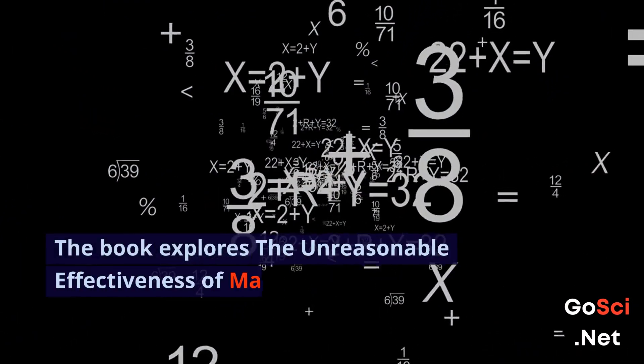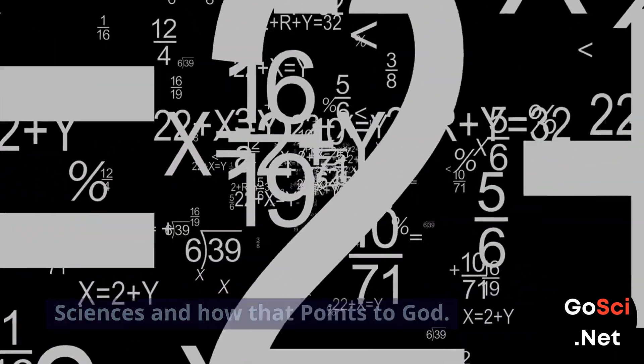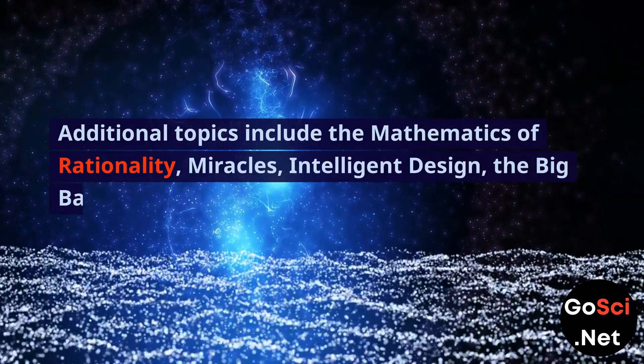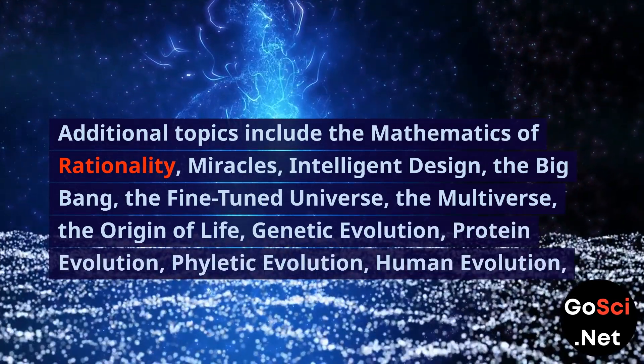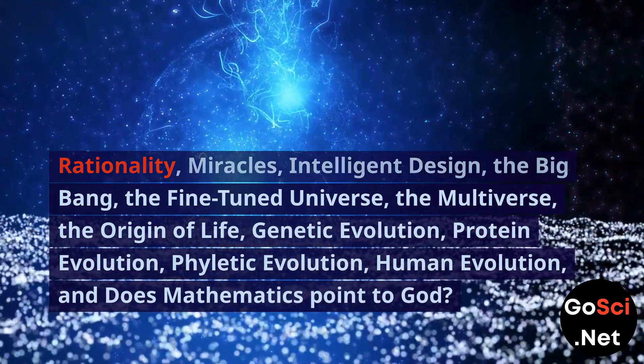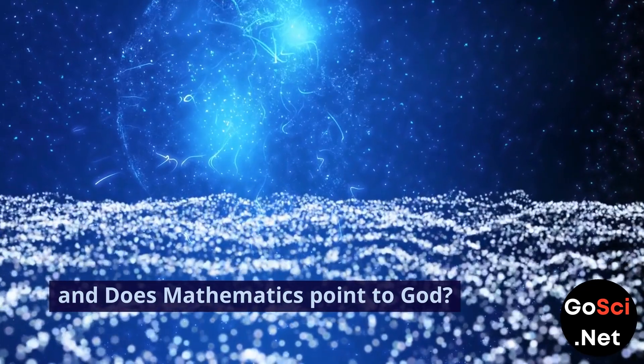The book explores the unreasonable effectiveness of mathematics in the natural sciences and how that points to God. Additional topics include the mathematics of rationality, miracles, intelligent design, the Big Bang, the fine-tuned universe, the multiverse, the origin of life, genetic evolution, protein evolution, phyletic evolution, human evolution, and does mathematics point to God?